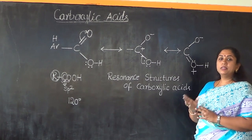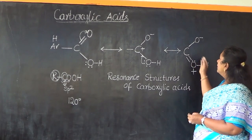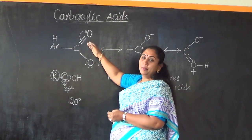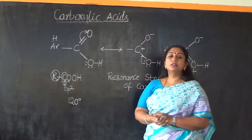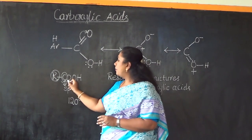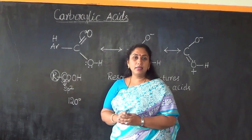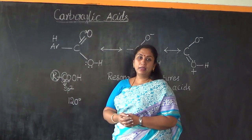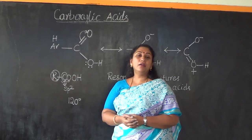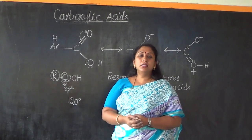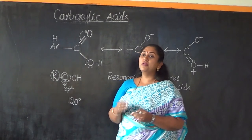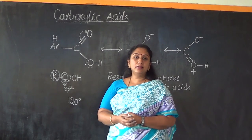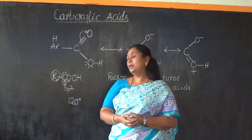In the resonance hybrid, carbon is bonded to one oxygen by a double bond and another oxygen by a single bond, as observed in the beginning. Because of these resonating structures, the carbonyl group of the carboxylic acid cannot act as an electrophile like other carbonyl-group-containing organic compounds, and therefore they do not undergo addition reactions with respect to the carbonyl group.